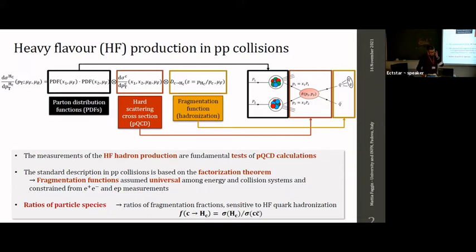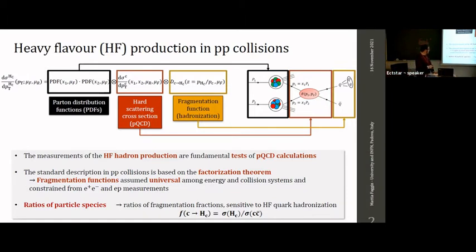The first term is the parton distribution functions, which describe how the partons are distributed within the colliding protons. The second term is the hard scattering cross section, calculated with perturbative techniques. The third is the fragmentation function, which describes hadronization — it quantifies the probability of a quark to produce a hadron of a given species with a certain momentum fraction of the original quark.